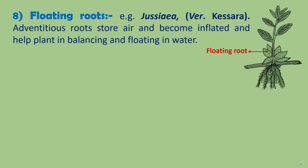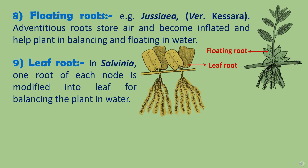There are some other roots like floating roots. These roots are found in aquatic plants like Jussiaea, commonly known as the Kisara plant. In this plant, some of the roots start storing air and become inflated, coming out of water and helping the plant in balancing and floating. Similarly, there are leaf roots in the Salvinia plant, in which one root at each node gets modified into a leaf-like structure — that is why they are also called leaf roots — and these roots also help the plant in floating in water.